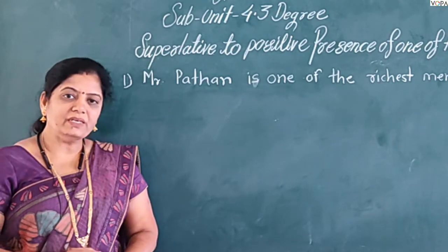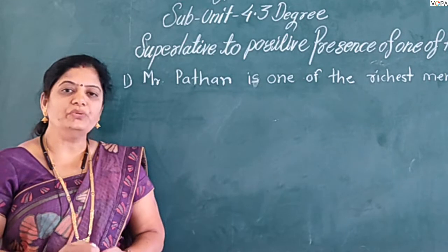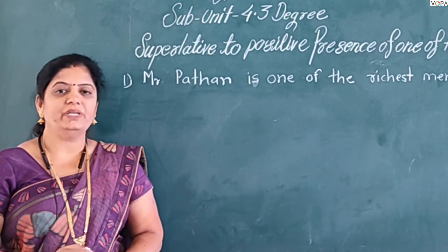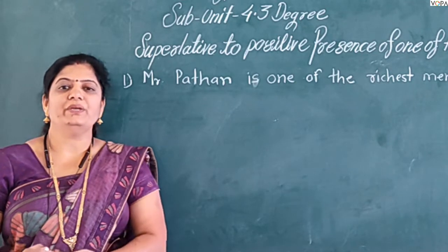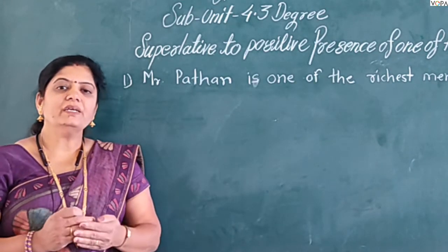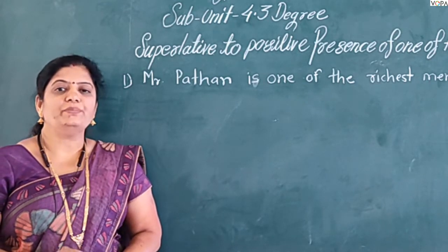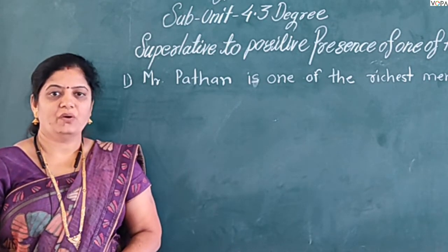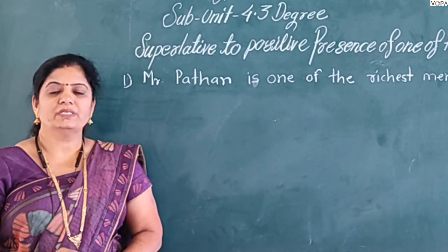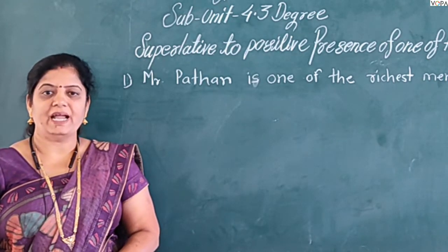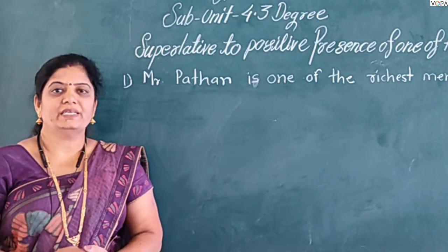Now, in the third part, we are going to learn how to change the superlative degree sentence to positive degree sentence and comparative degree sentence. In superlative degree sentences, there are two types of sentences: one is the presence of the 'one of' structure in a sentence, and the other is the absence of the 'one of' structure in a sentence.